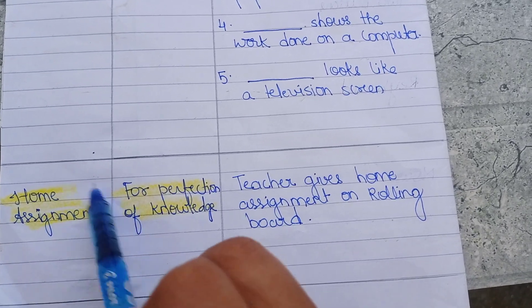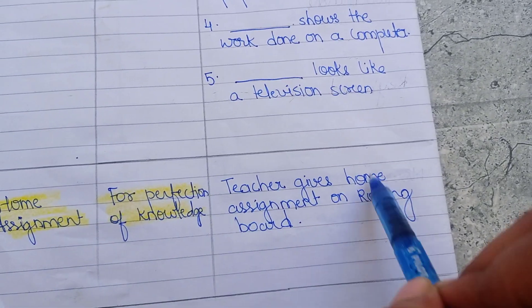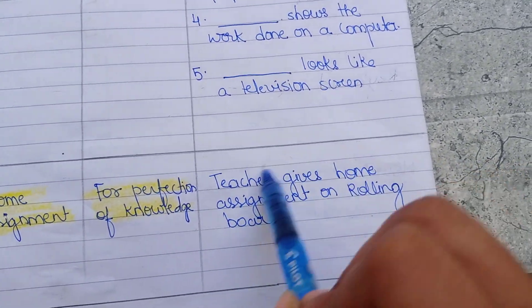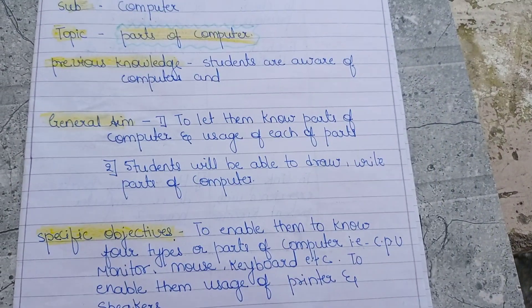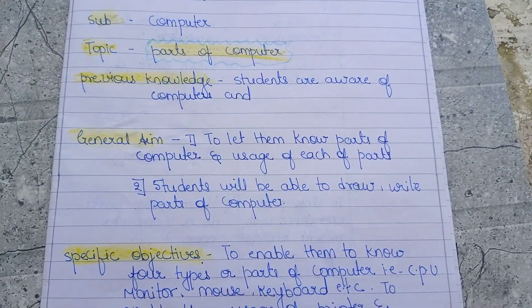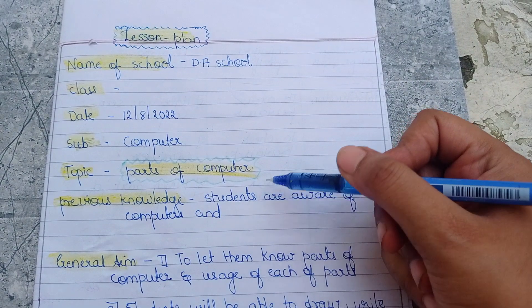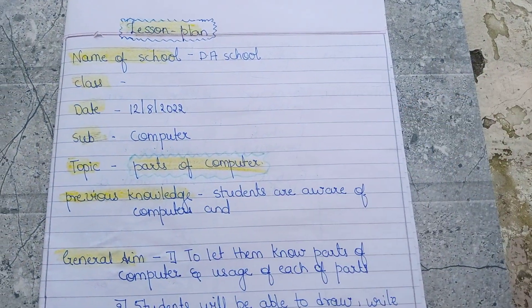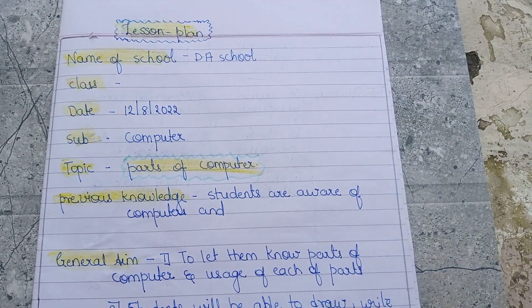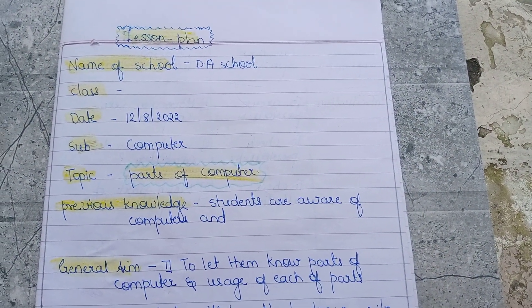For the home assignment, the teacher has to give an assignment written on the rolling board for perfection of knowledge. This was the lesson plan on the topic Parts of Computer. If you liked this video, please like, share, and subscribe. Thank you for watching.